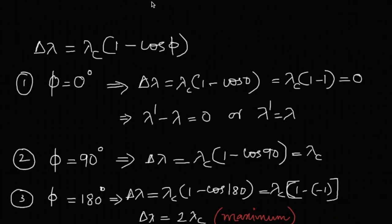First, let's take the angle to be 0. Substituting in the equation delta lambda equals lambda c times 1 minus cos 0. Cos 0 is 1, so 1 minus 1 equals 0. Therefore delta lambda, which is lambda prime minus lambda, equals 0, which means lambda prime equals lambda. That is, the incident and scattered photon will have the same wavelength.